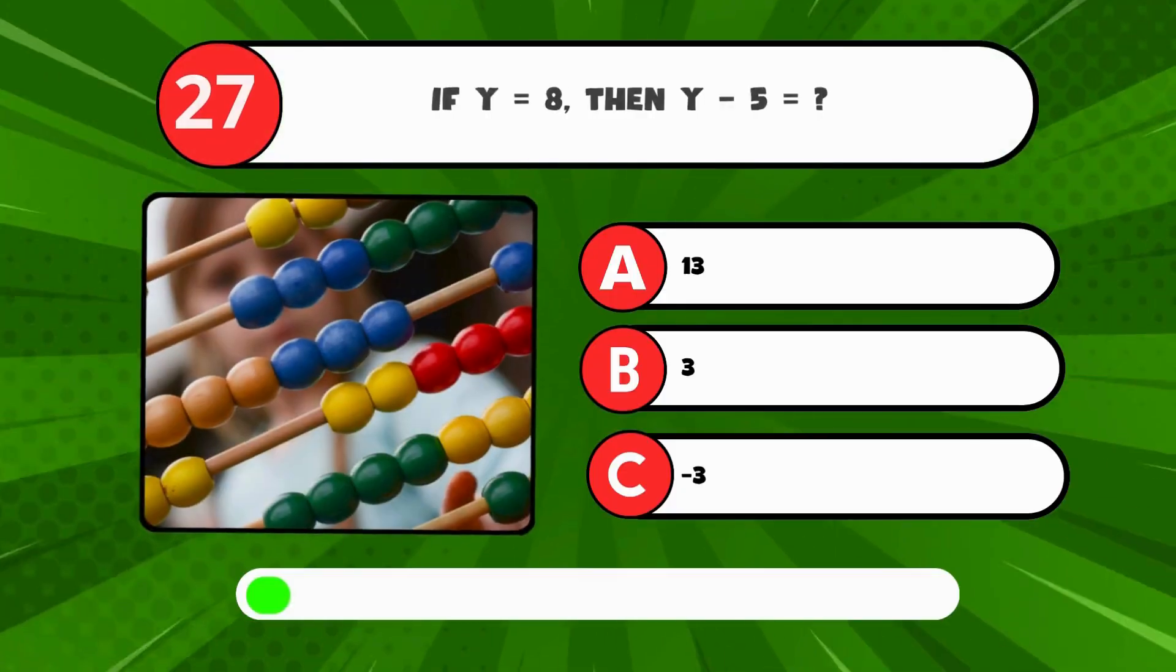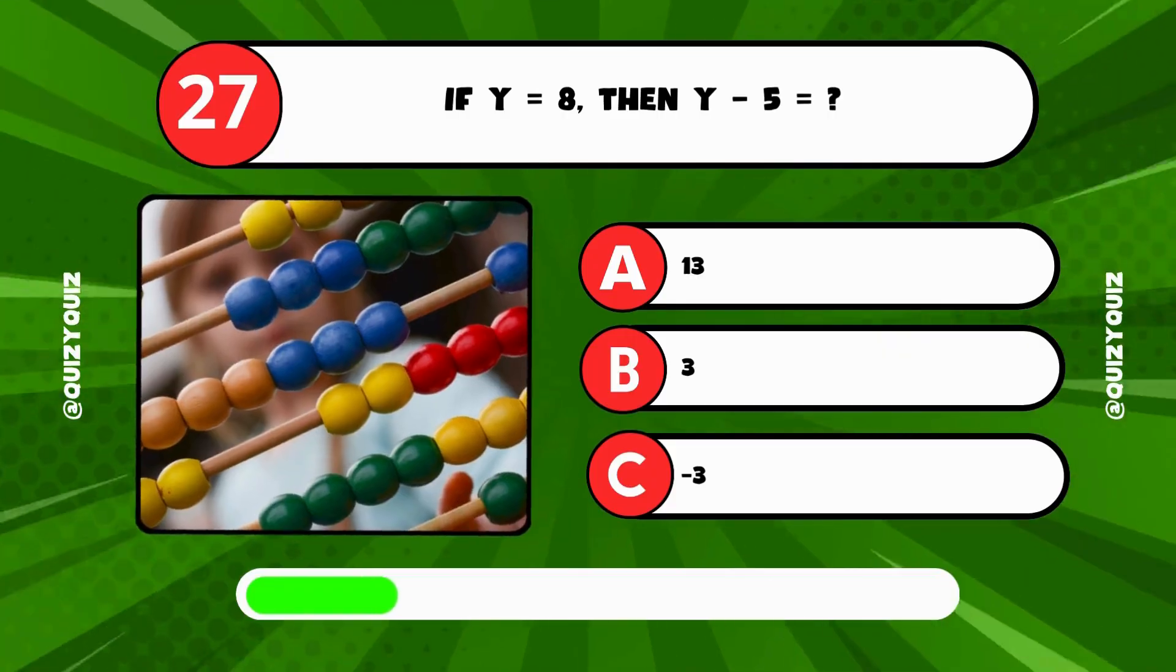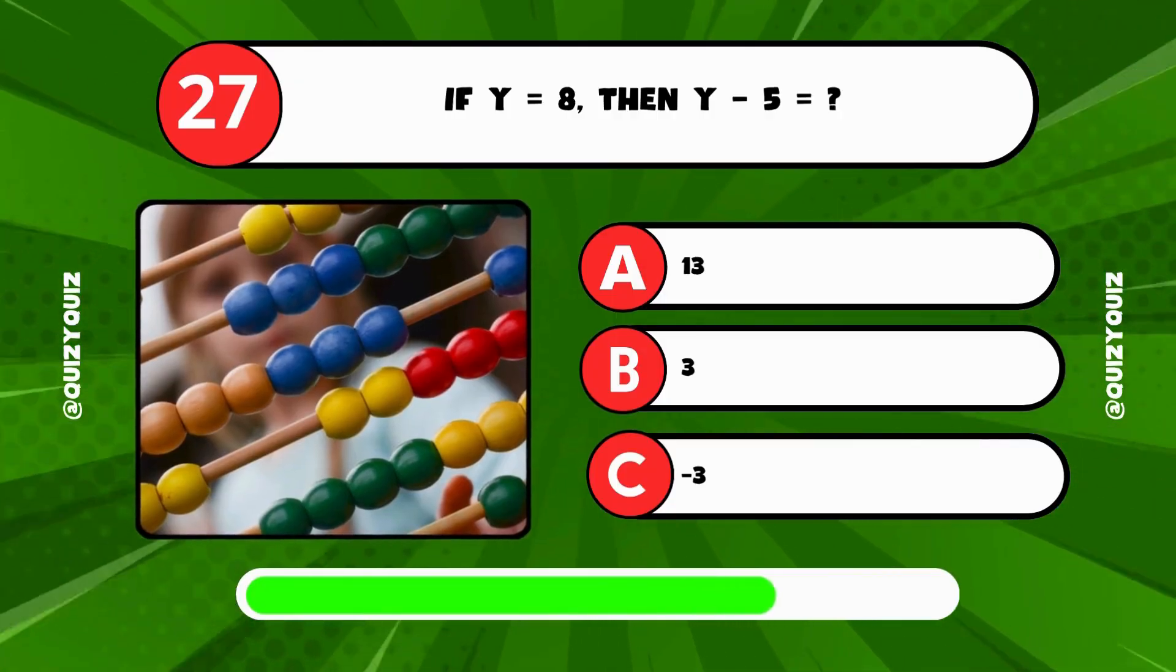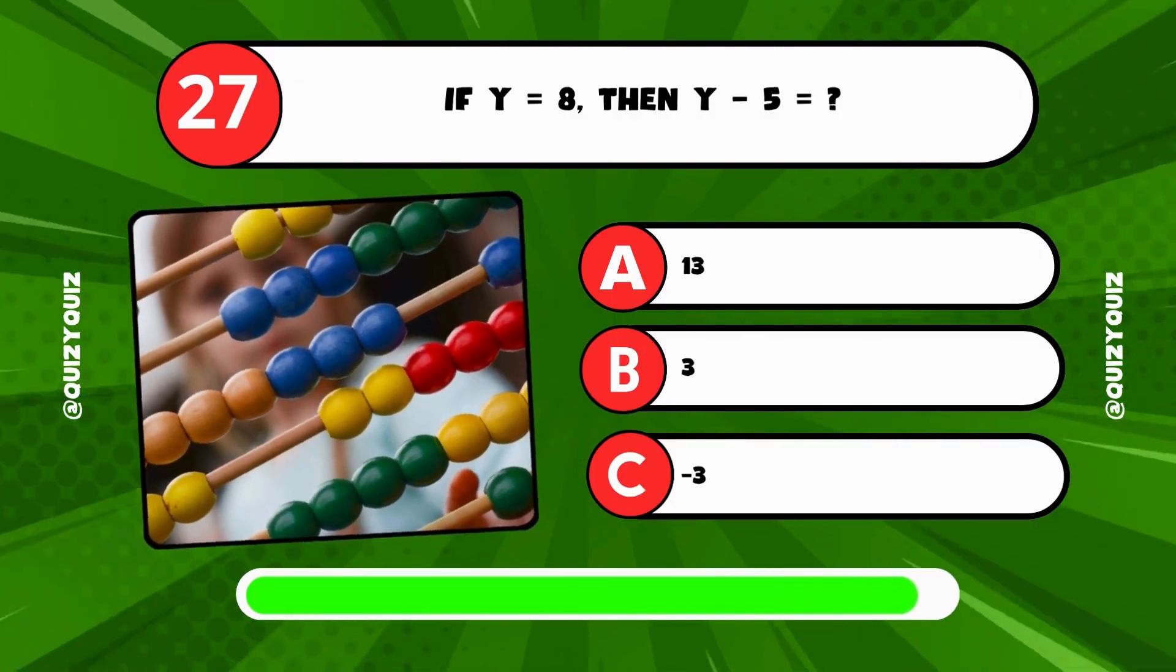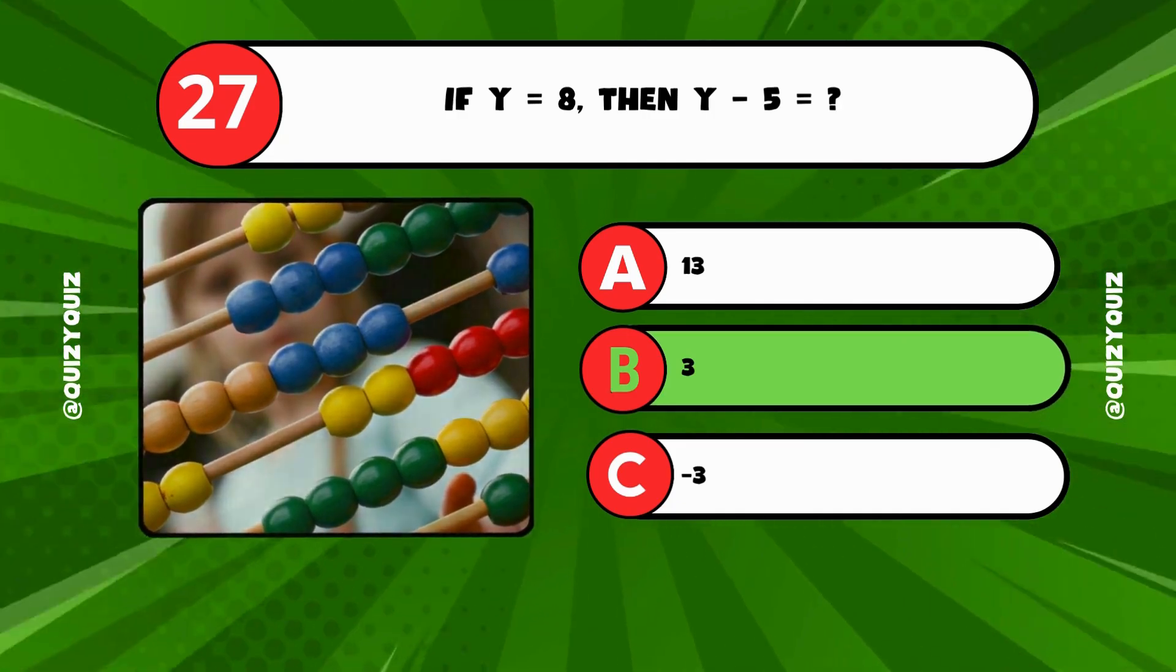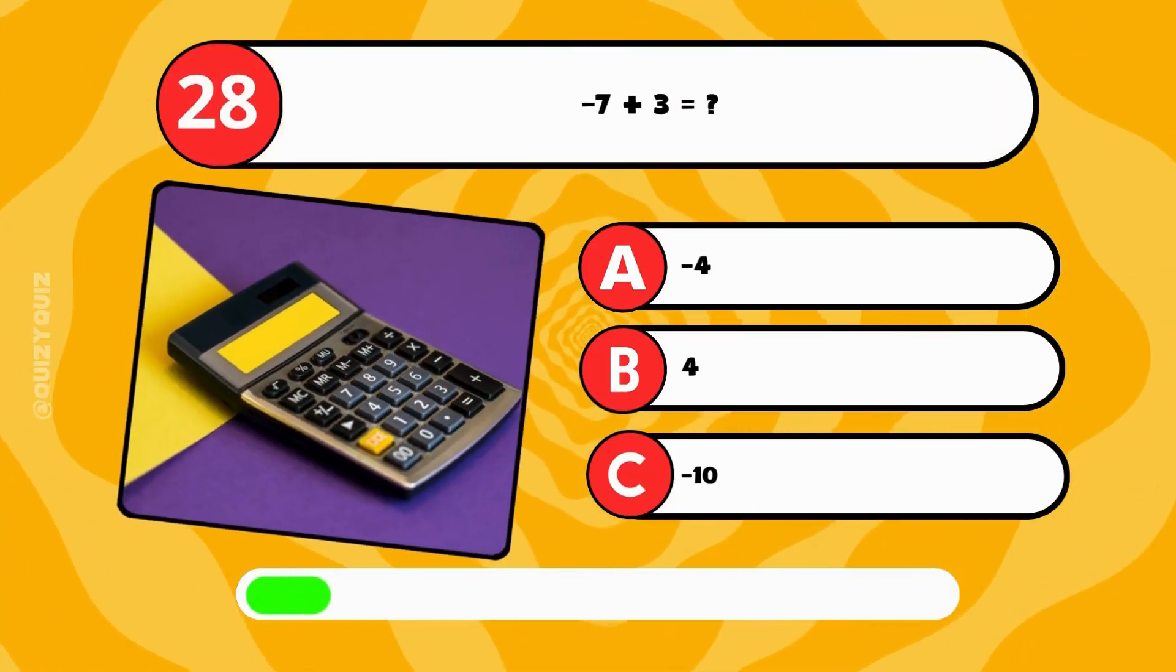6 x equals 36, what is x? If y equals 8, then y minus 5 is? Minus 7 plus 3 is